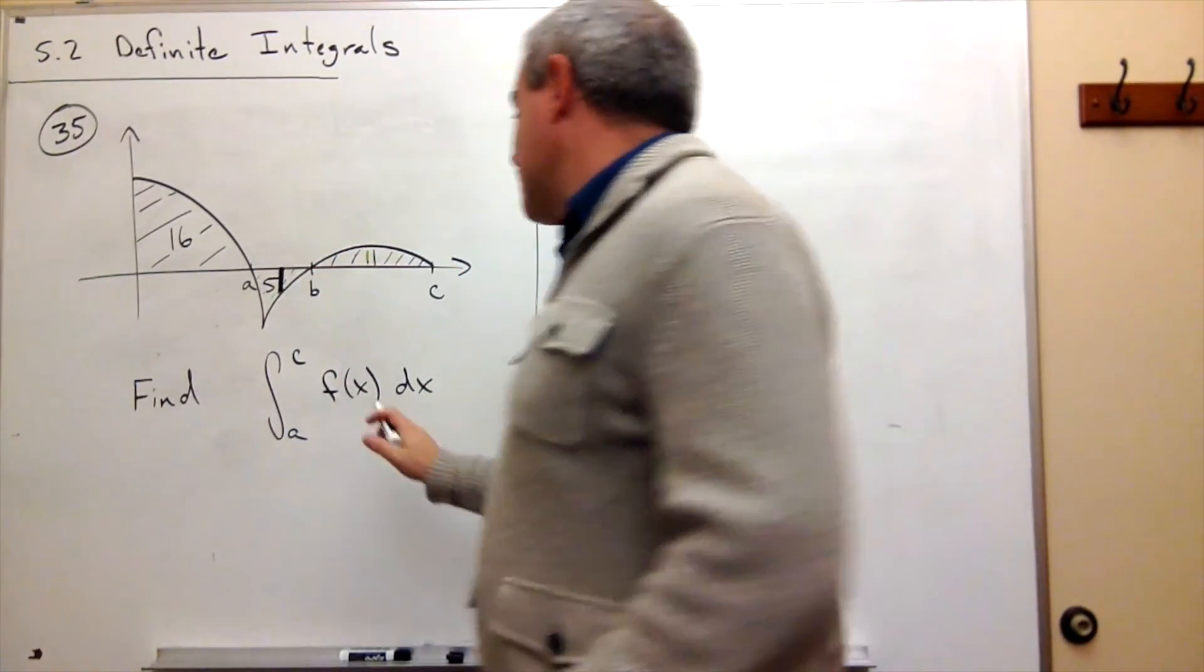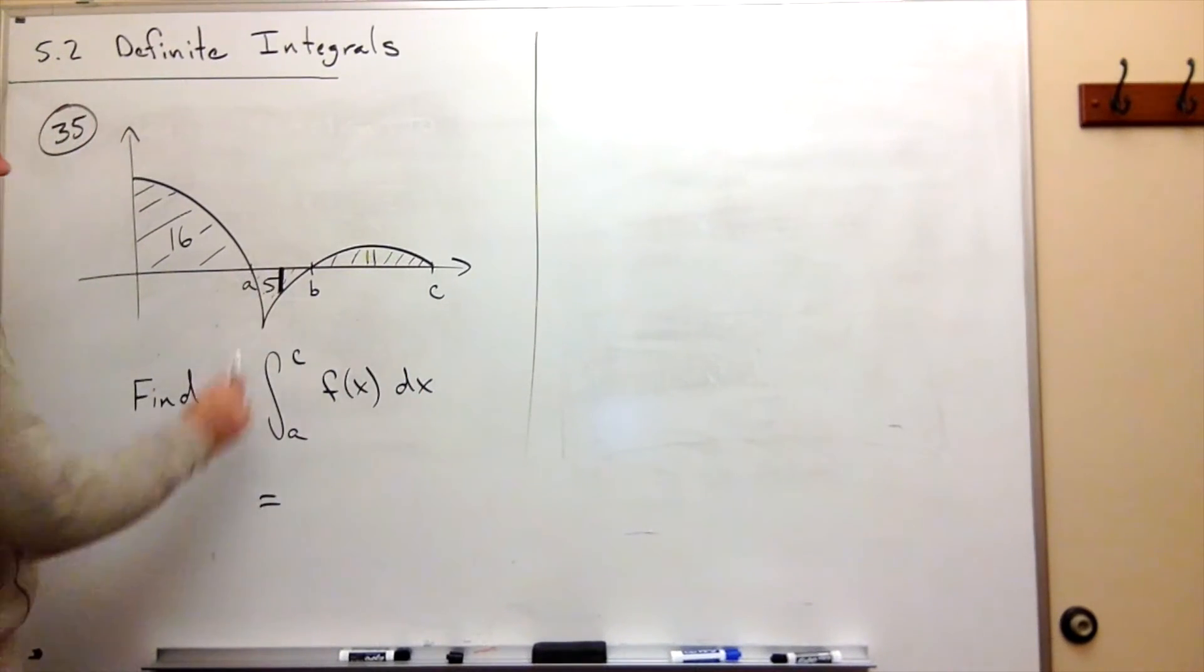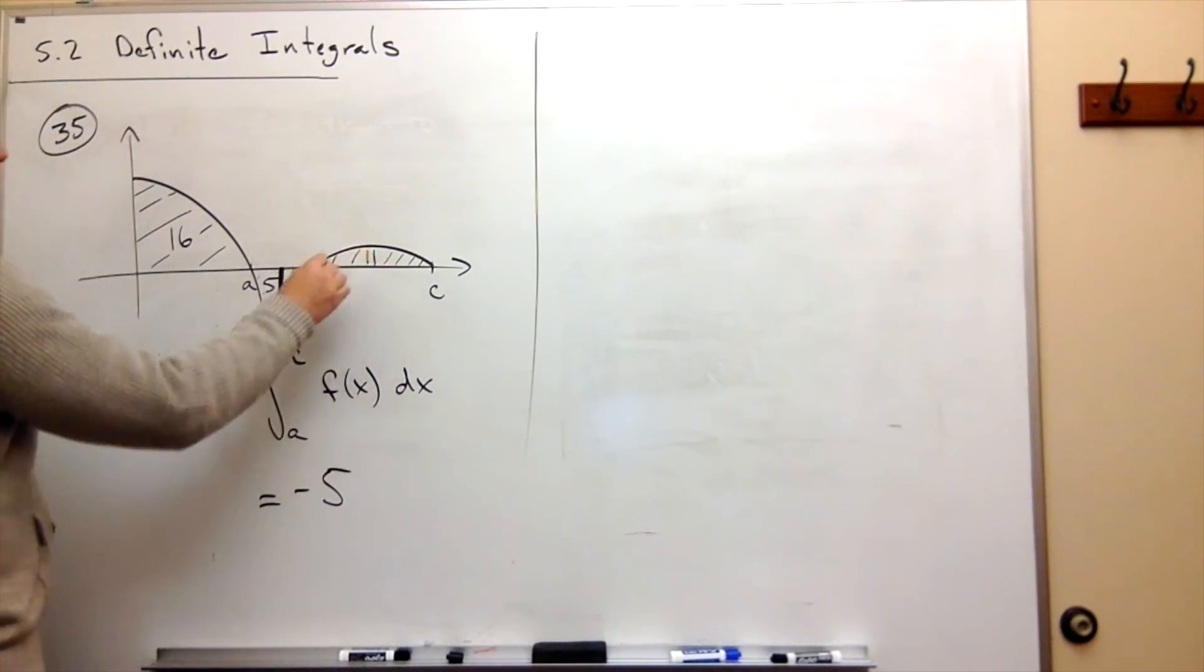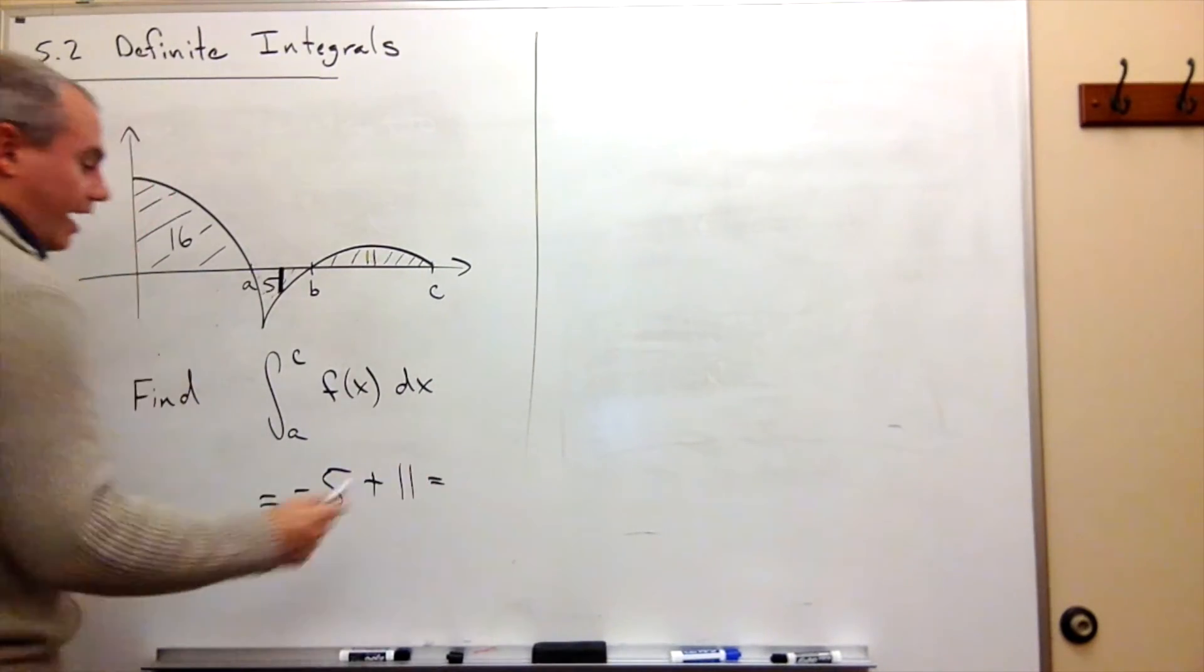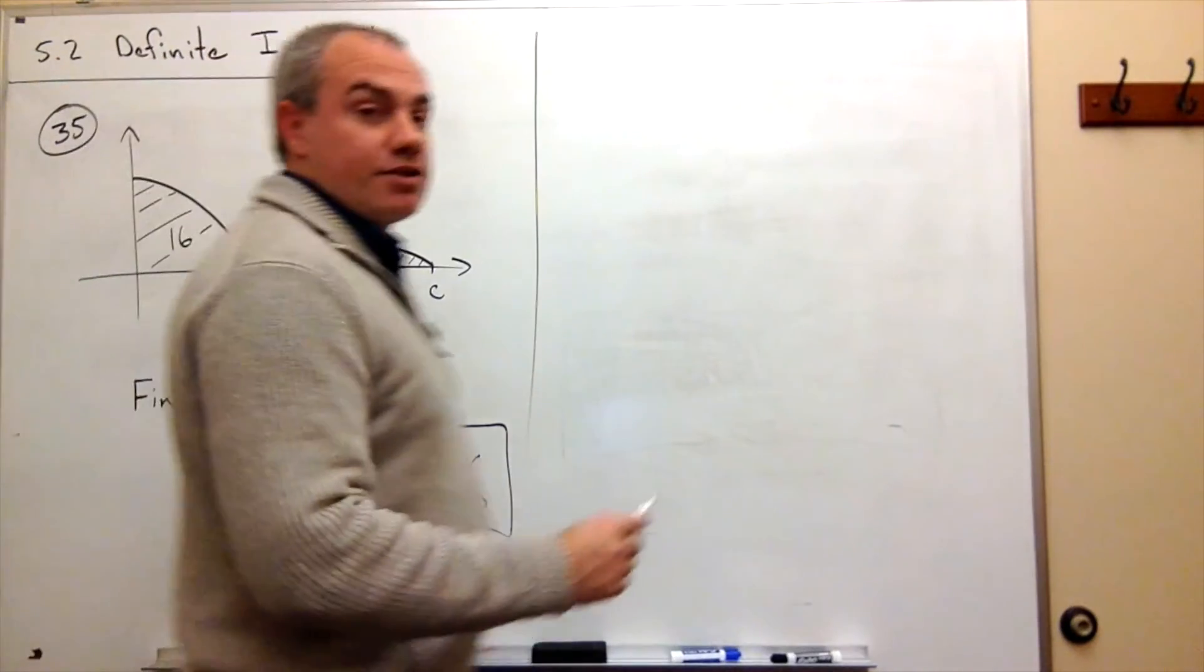So to find this integral, I need to say: this is interpreted as negative, so minus 5, and this is interpreted as positive, plus 11. We end up with an answer of 6.